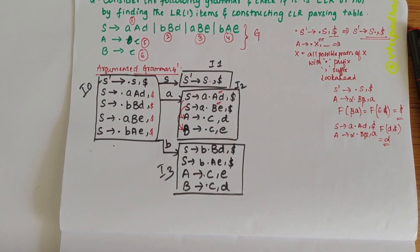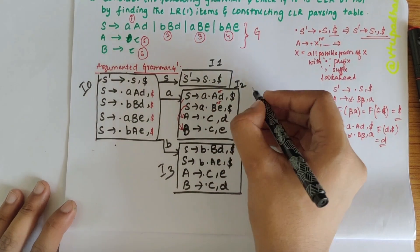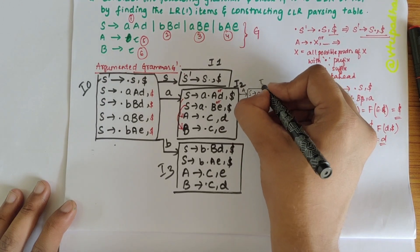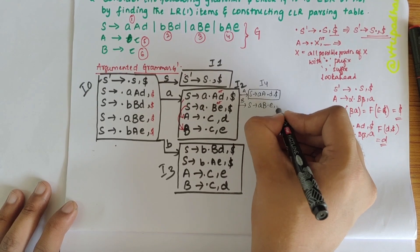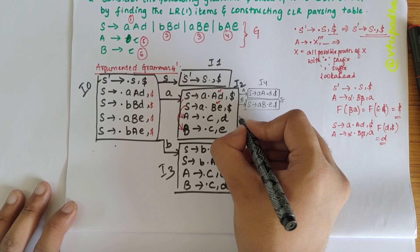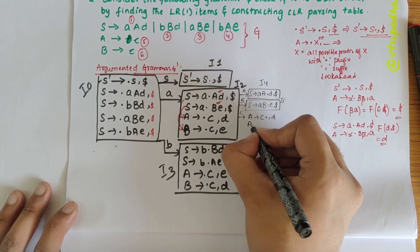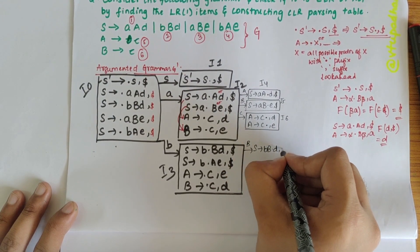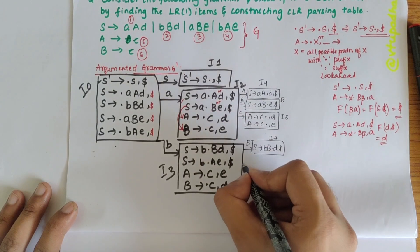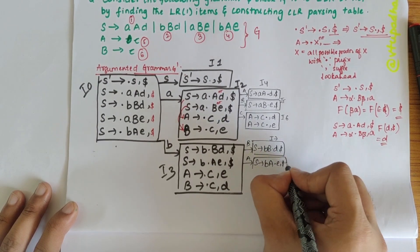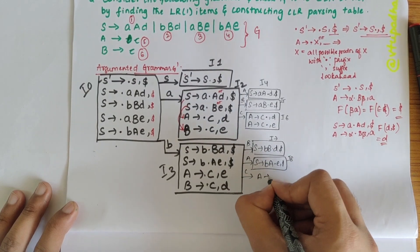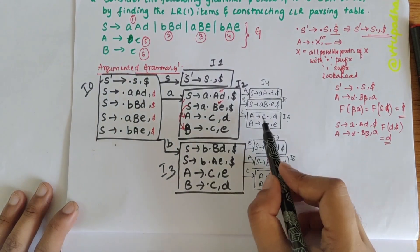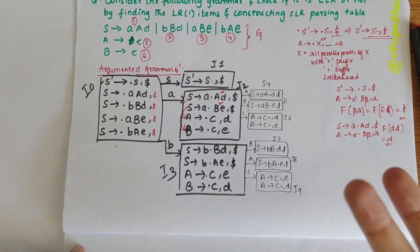From I2, over capital A I get S → AA•d, $ — this is I4. Over B I get S → AB•e, $ — this is I5. Over small c I get A → c•, d and A → c•, e — this is I6. From I3, over B I get S → BB•d, $ — this is I7. Over capital A I get S → BA•e, $ — this is I8. Over c I get B → c•, e and A → c•, d — this is I9. Note that I6 and I9 look similar but differ in their lookaheads.